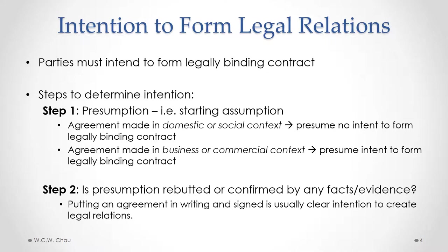Once we've determined the relevant presumption, the next step is to determine whether or not that presumption is either rebutted or confirmed by the facts or evidence of the case — what, if anything, did the parties actually do that would rebut or confirm the presumption. One of the key things we look at is whether or not the parties put their agreement in writing and signed it. When people do that, it usually means they're serious about forming a binding contract and is a clear indication of an intention to create legal relations.